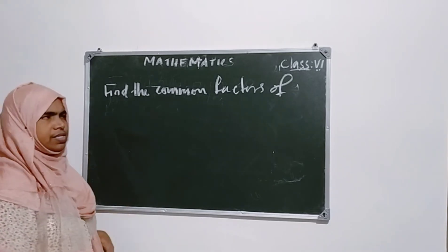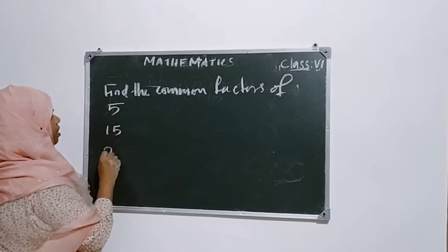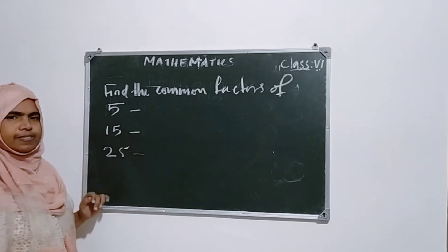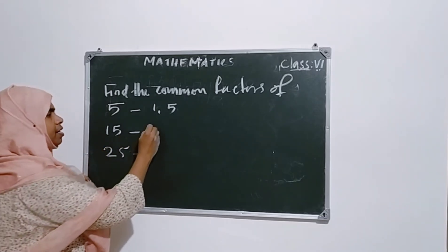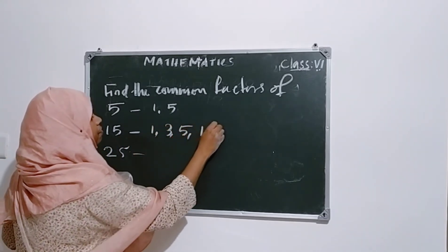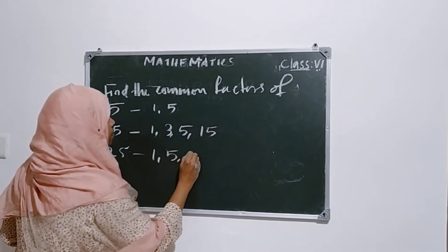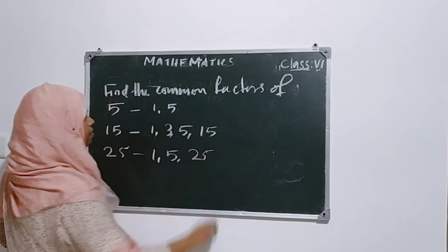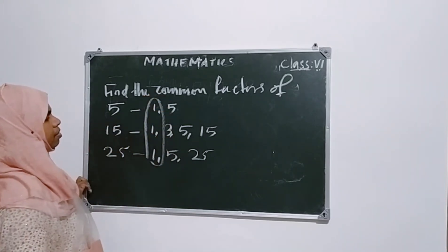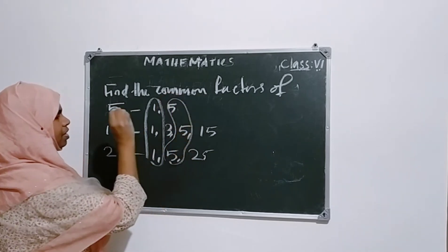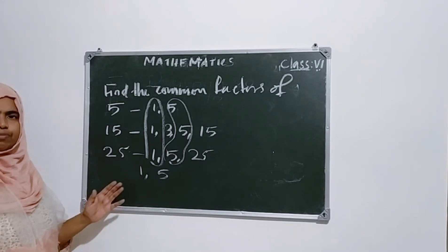Then the next question: find the common factors of 5, 15, and 25. Factors of 5: 1, 5. Factors of 15: 1, 3, 5, 15. Factors of 25: 1, 5, 25. The common factors are 1 and 5.